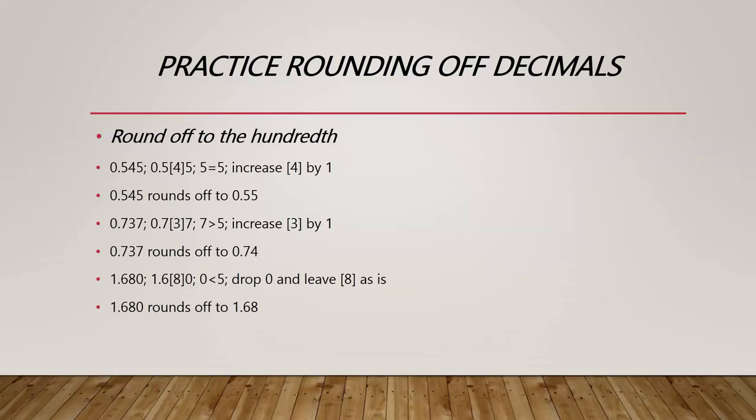1.680 — we put the brackets on the 8. Zero is less than 5, so we drop the 0 and leave the bracket number as it is. 1.680 rounds off to 1.68.